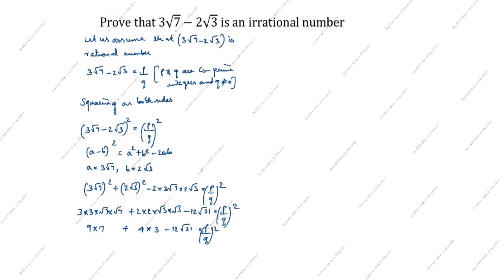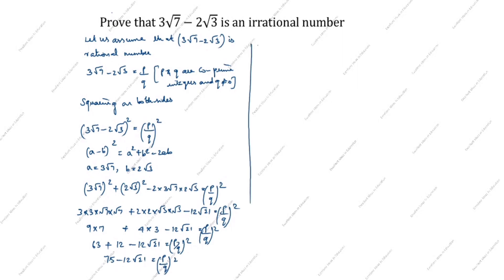Next step: 9 times 7 is 63, plus 4 times 3 is 12, minus 12 root 21, equal to p by q whole square. So 63 plus 12 is 75. Therefore: 75 minus 12 root 21 is equal to p squared divided by q squared.